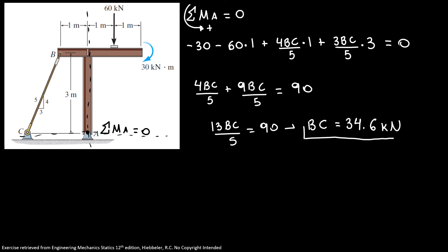So here we found the tension developed in our cable. Now from the previous equation I know that Ax is equal 3 over 5 times BC, so my Ax is equal 20.8 kilonewtons. Now for our other equation I have Ay is equal 60 plus 4BC over 5. So my Ay is equal 87.7 kilonewtons.